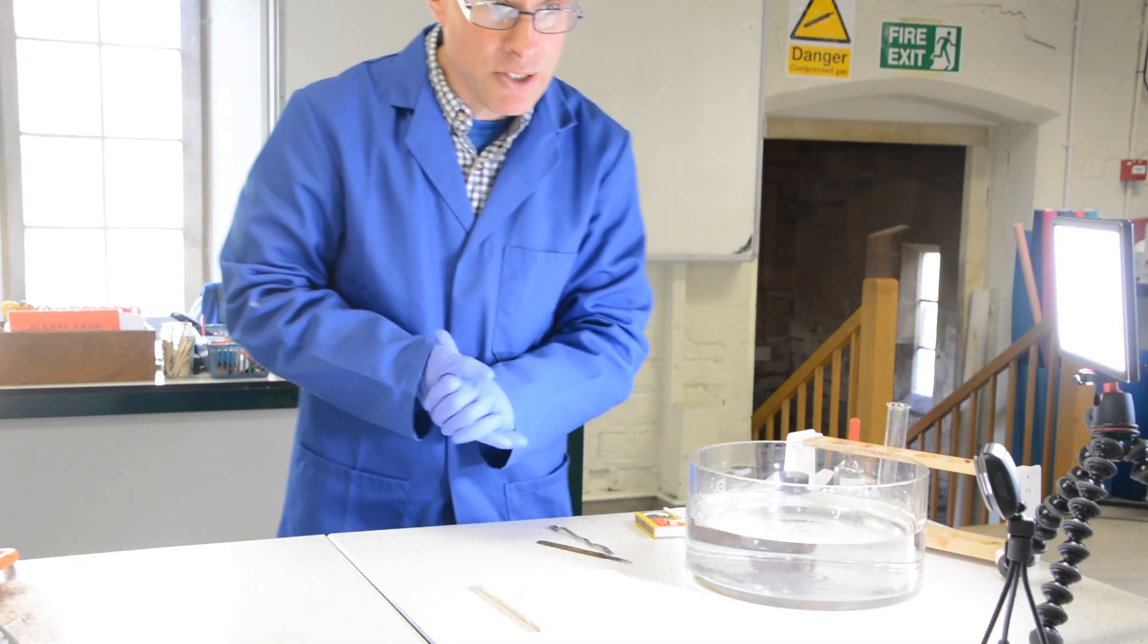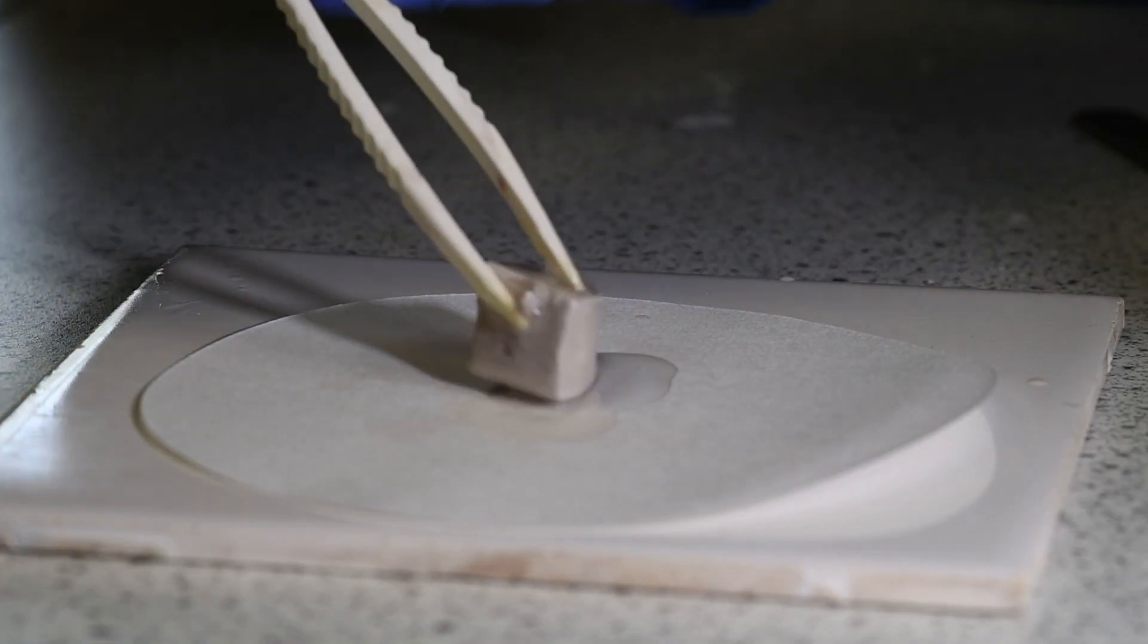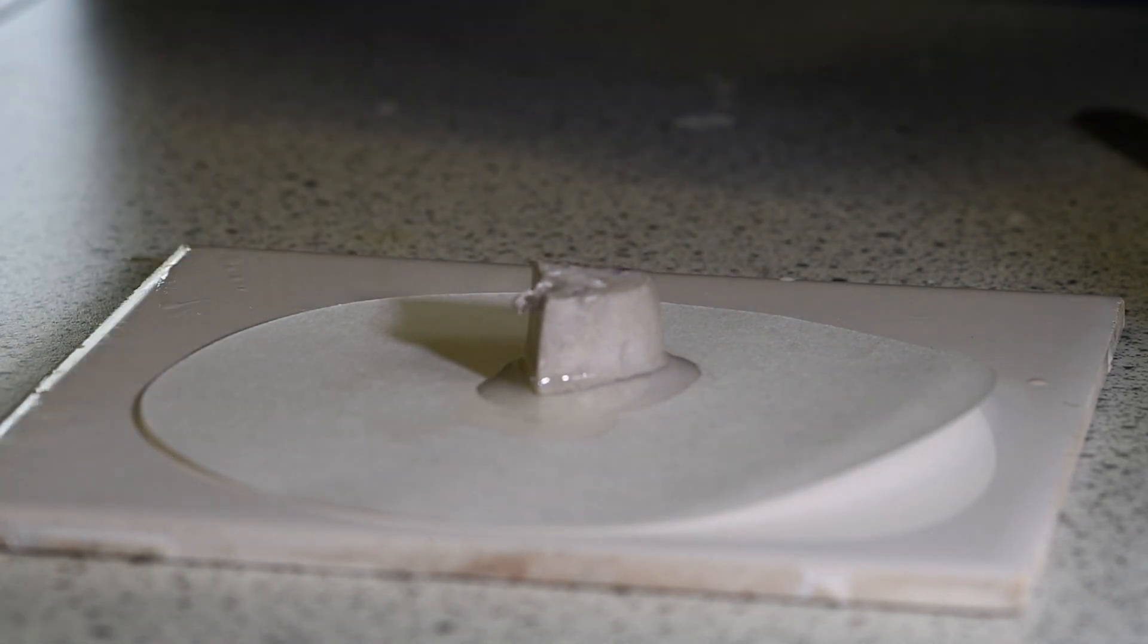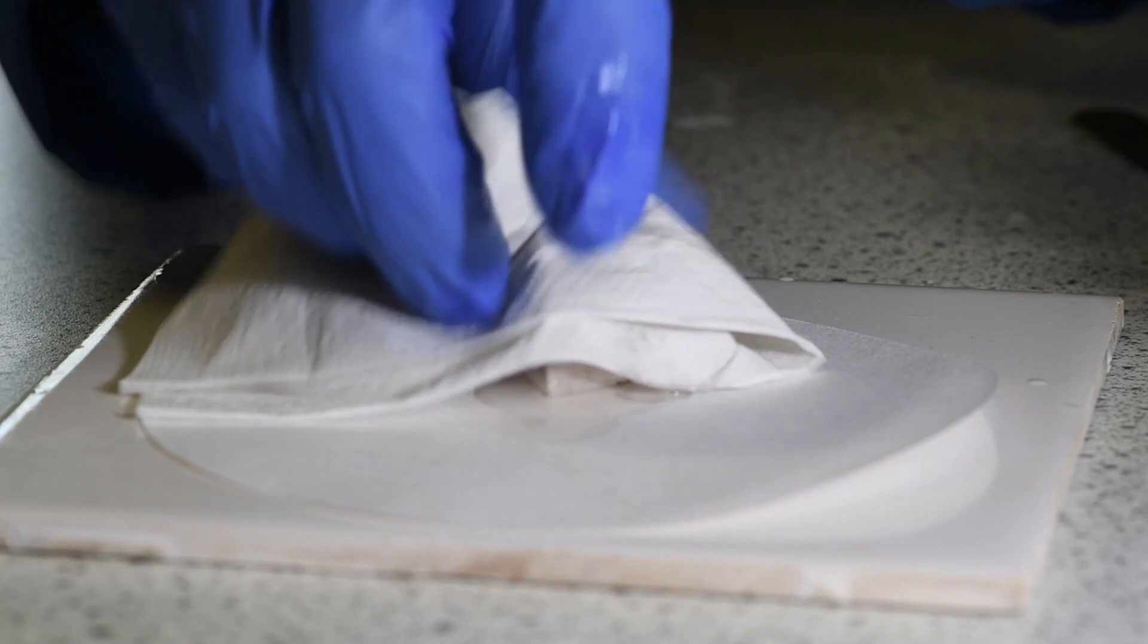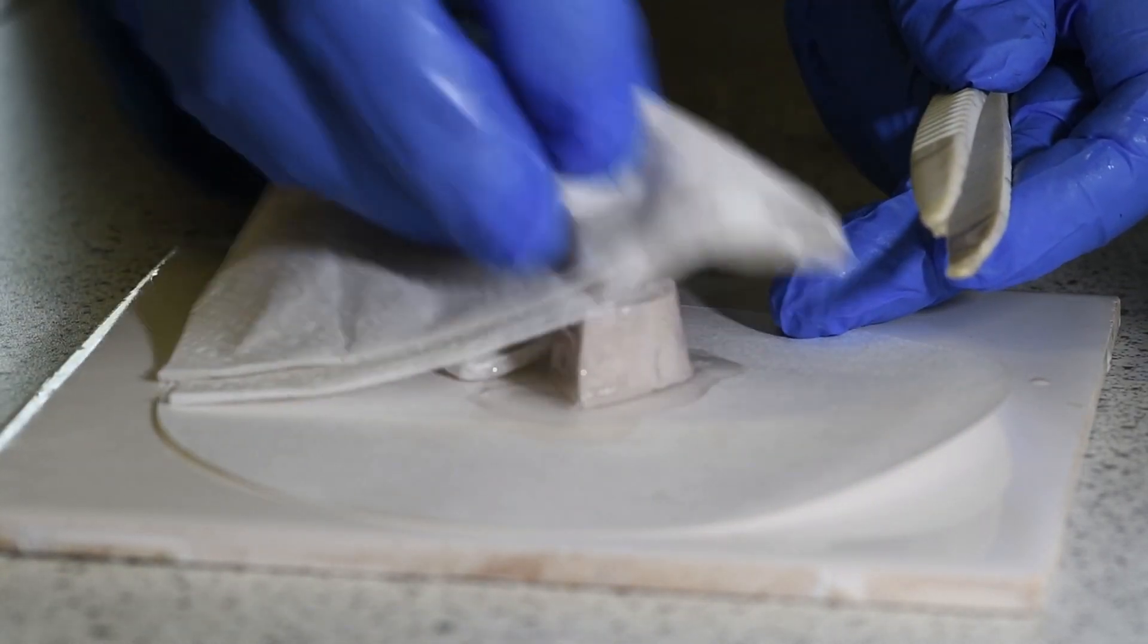The second metal that we're going to have a look at is sodium. There's a big piece of sodium. Again, you can see all that oil over the surface. I'll just dry some of that oil off.